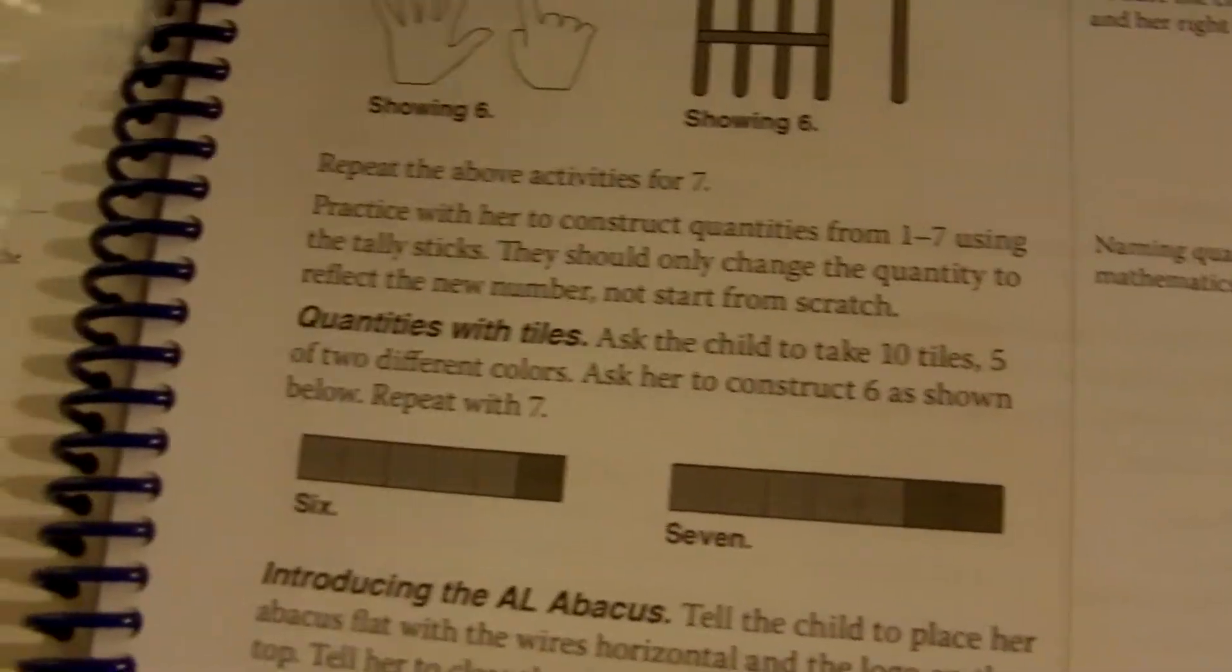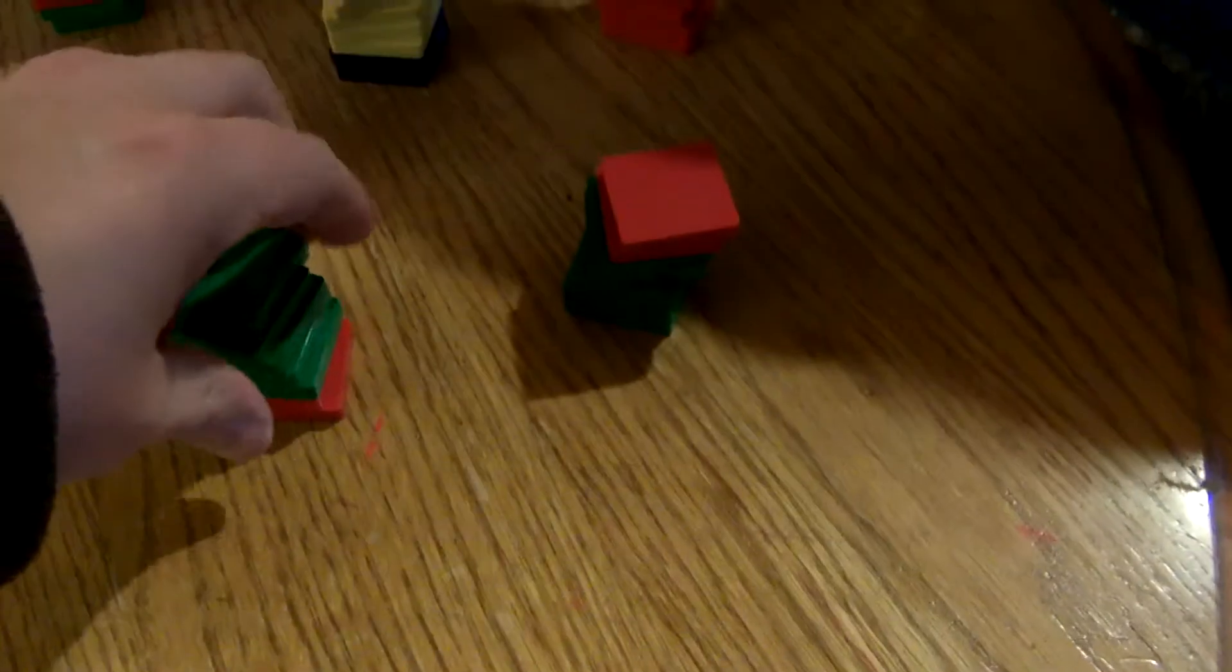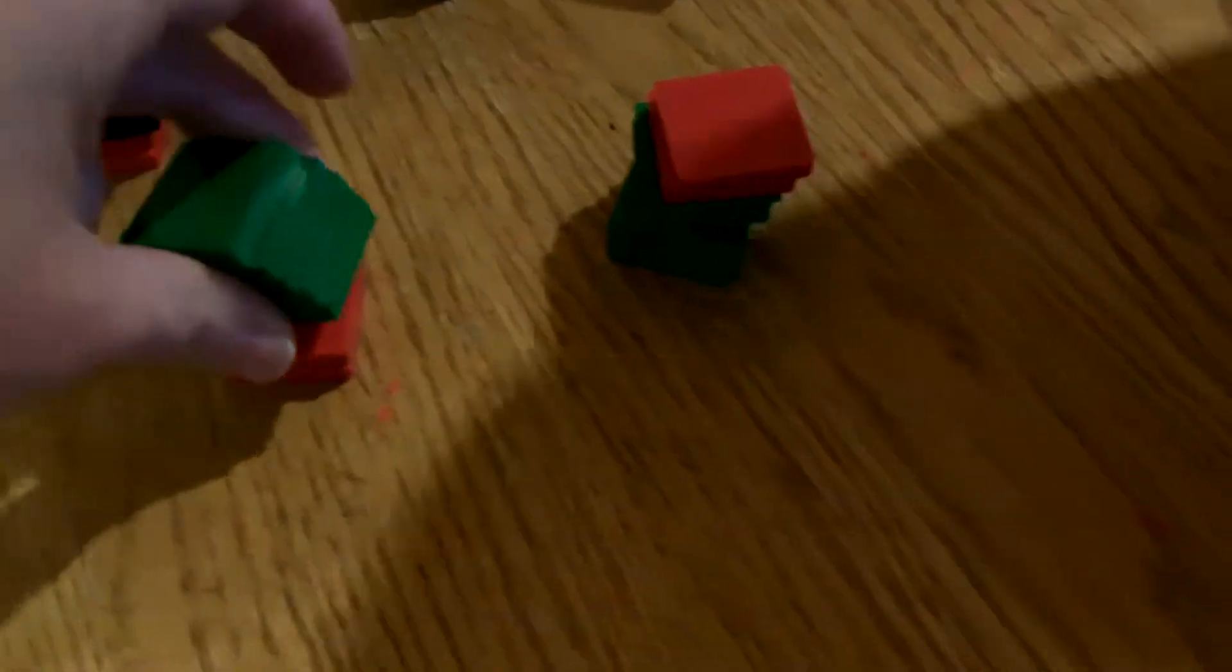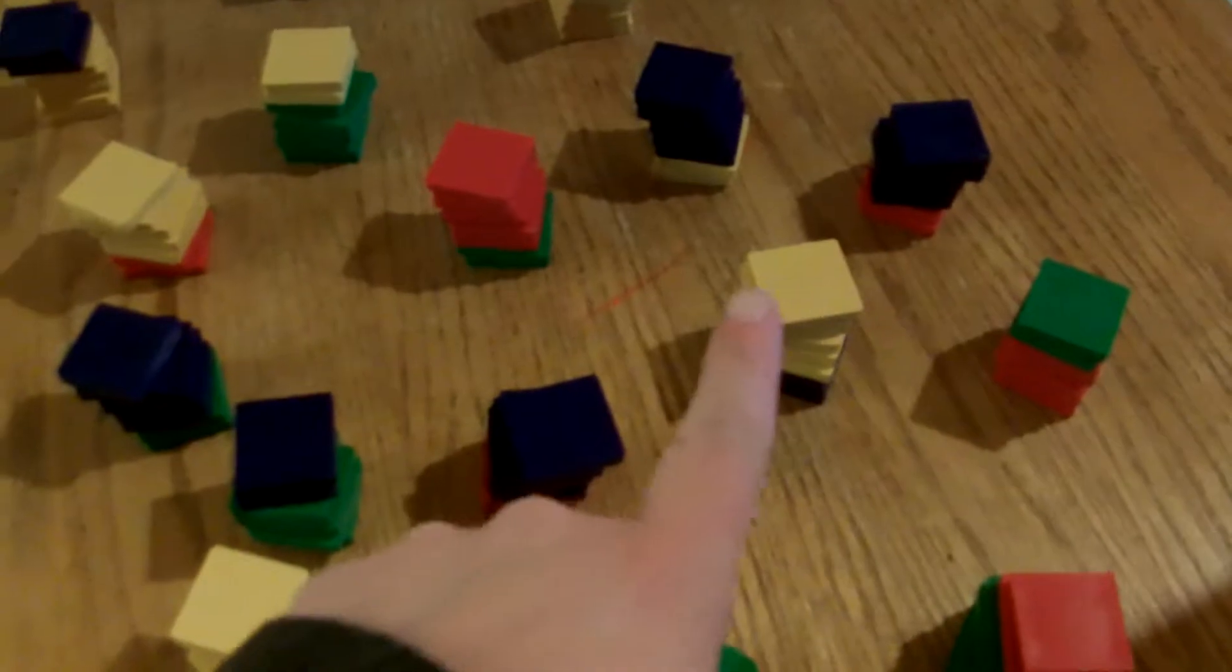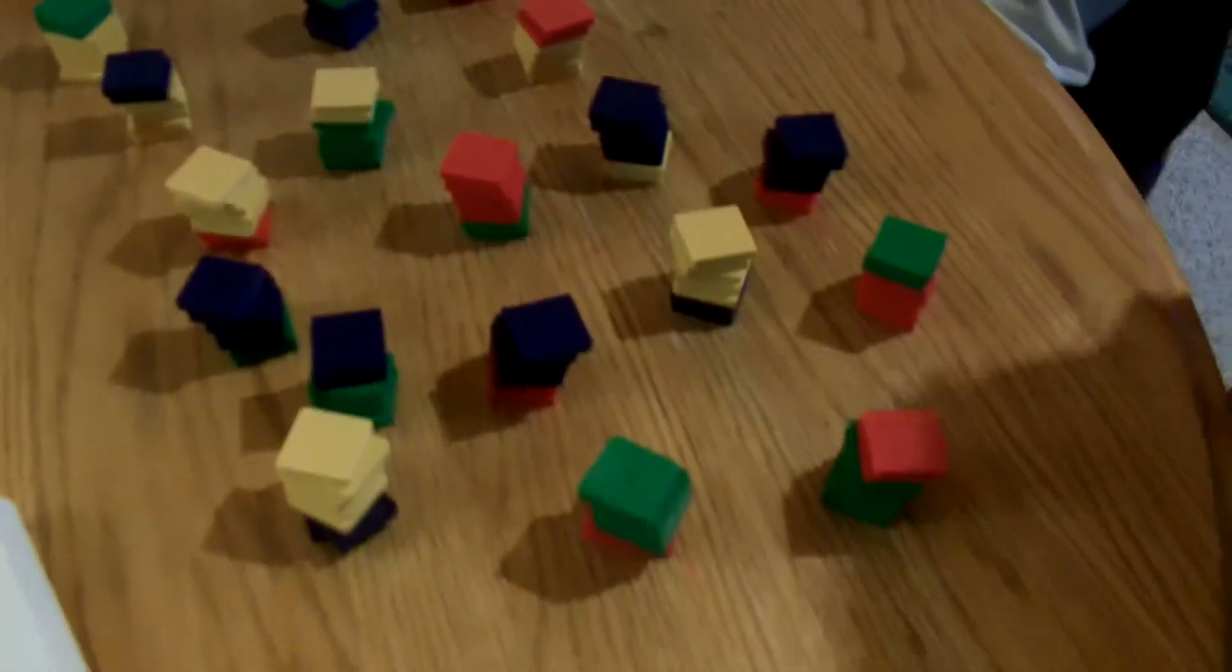Now we're using our color tiles, one of our favorite manipulatives that came with this set, to make groups of seven. So we made lots and lots of stacks of seven using five of one color and two of a separate color tile. And it looks like we have one, two, three, four, five, six... twenty-five, twenty-six, twenty-seven piles of seven.